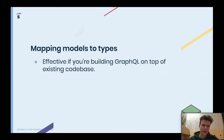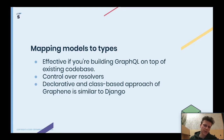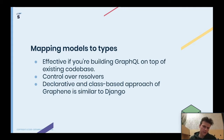To summarize: mapping models to types in Graphene is effective when building on top of an existing codebase. You have full control over the field resolvers — they are mapped automatically, but you can still control how they behave. If you want to add permissions to a particular resolver, you can do that easily. Also, Graphene uses a declarative programming style very similar to Django, so if your team is starting with GraphQL, it's easy to dive in because you have the same patterns in both frameworks.